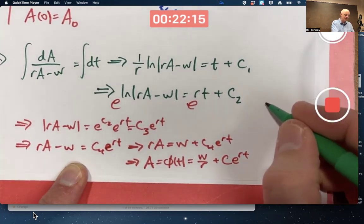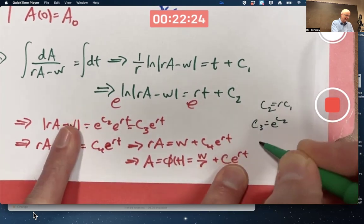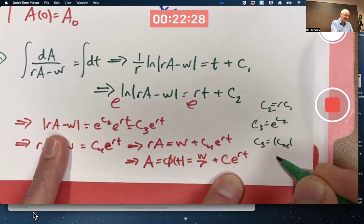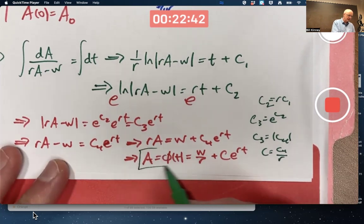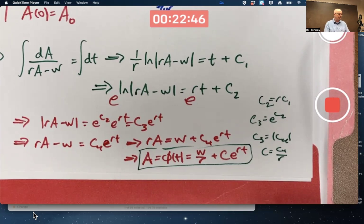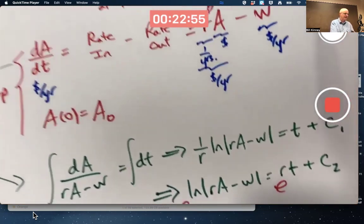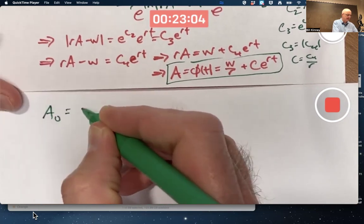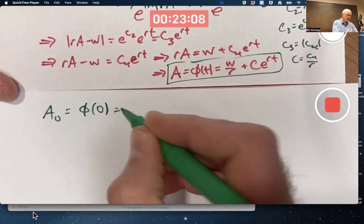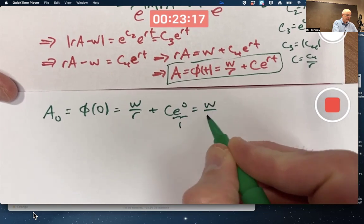Exponentiate to get rid of the logarithm. We'll get the absolute value of RA minus W is e to the C2 e to the RT which I'll write as C3 e to the RT where C3 is e to the C2 and then we can pseudo justify getting rid of the absolute value signs by saying hey C3 has got to be positive but if I write say C4 that could be positive or negative. Actually that's the first time I've used a C4 why not just call it C. It's because I'm going to do a couple other things before I have my final C. I'm going to now add W to both sides. RA is W plus C4 e to the RT. Then I'm going to divide both sides by R.